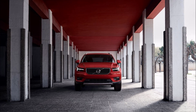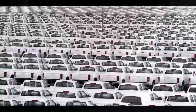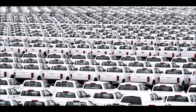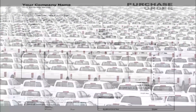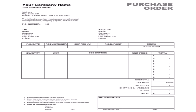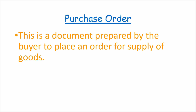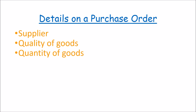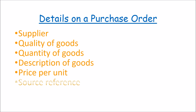Purchases order. Using our earlier illustration, if in my business I would like the car manufacturer to supply me with cars for resale, I'll write a document to notify the car manufacturer that I need those cars supplied to my business premises. This kind of document is what I'm calling a purchase order. A purchase order is a document prepared by the buyer to place an order for supply of goods. It gives details of the supplier, quality, quantity and description, price per unit, source reference, time and place of delivery, and so on. This order is fully authorized and signed by the buyer.